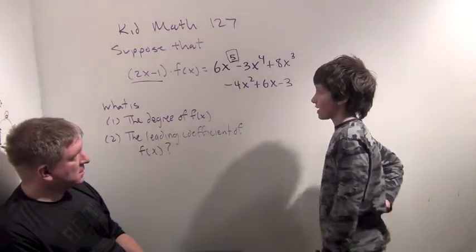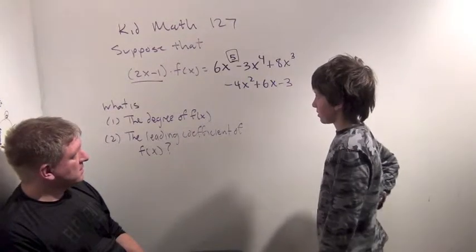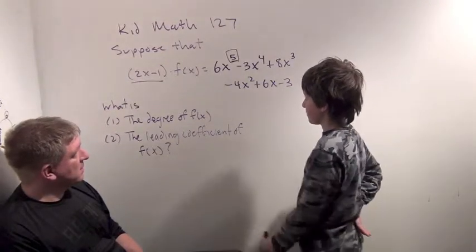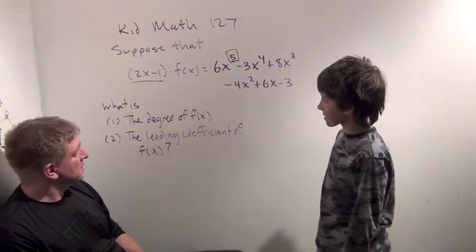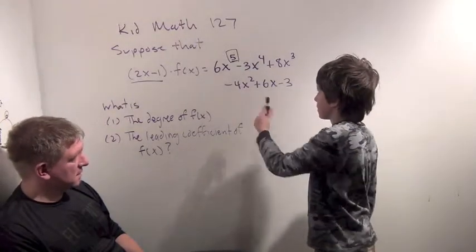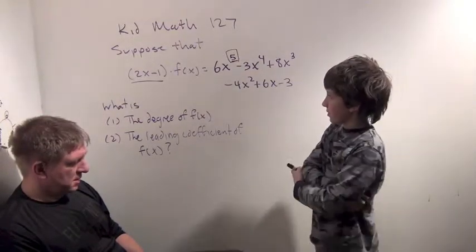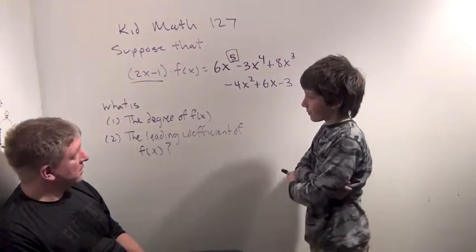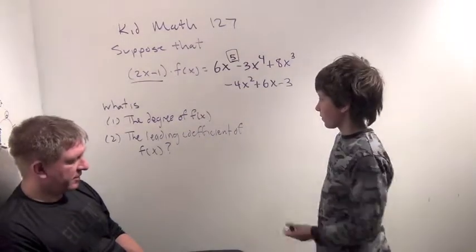So, but that's the highest you can get, because if you have an x to the 5th in this one, there would be an x to the 6th in this, but there isn't, so the degree has to be 4. All right, the degree has to be 4. Very good. Very good reasoning, too.